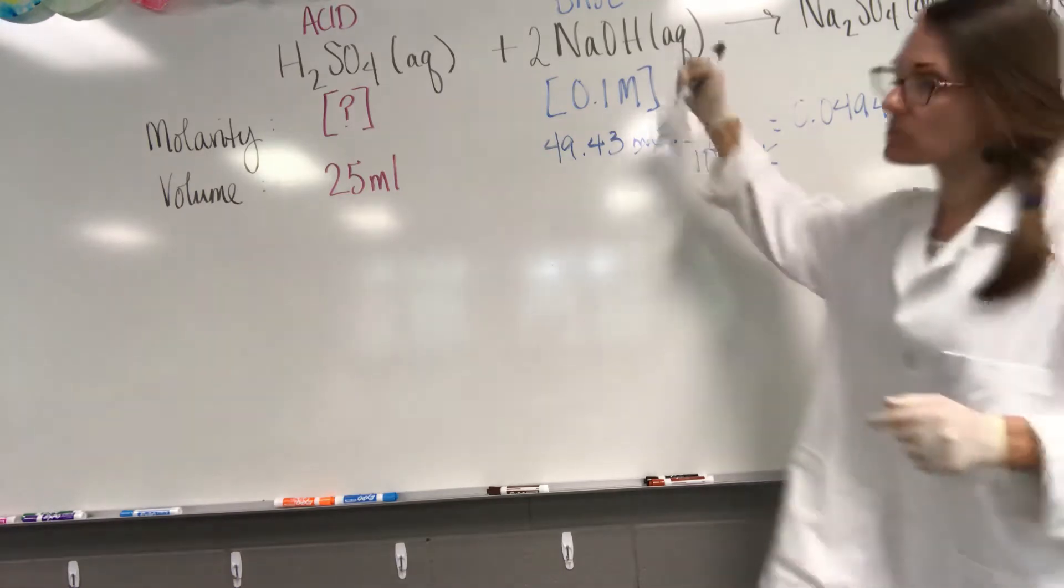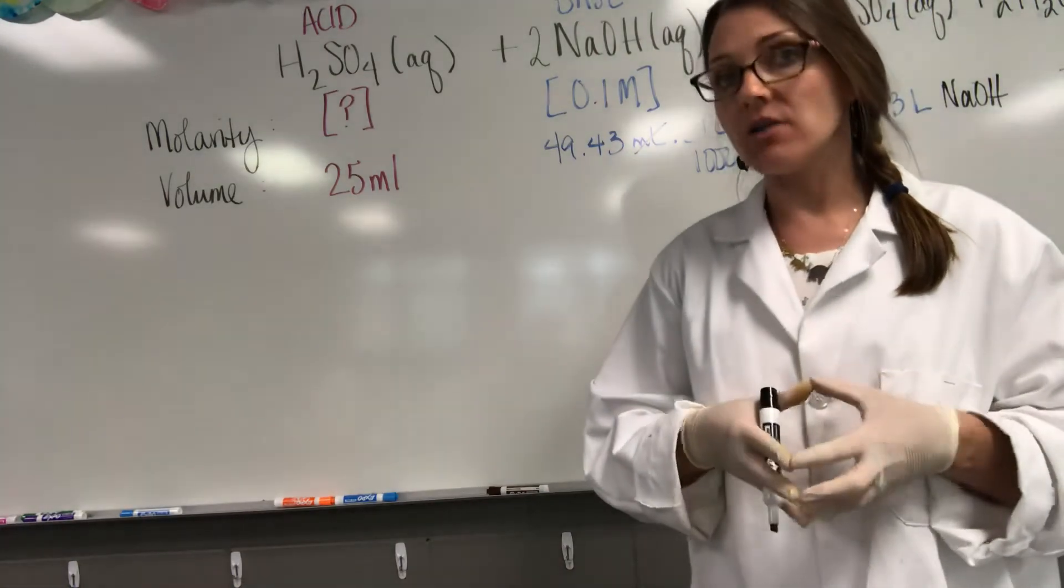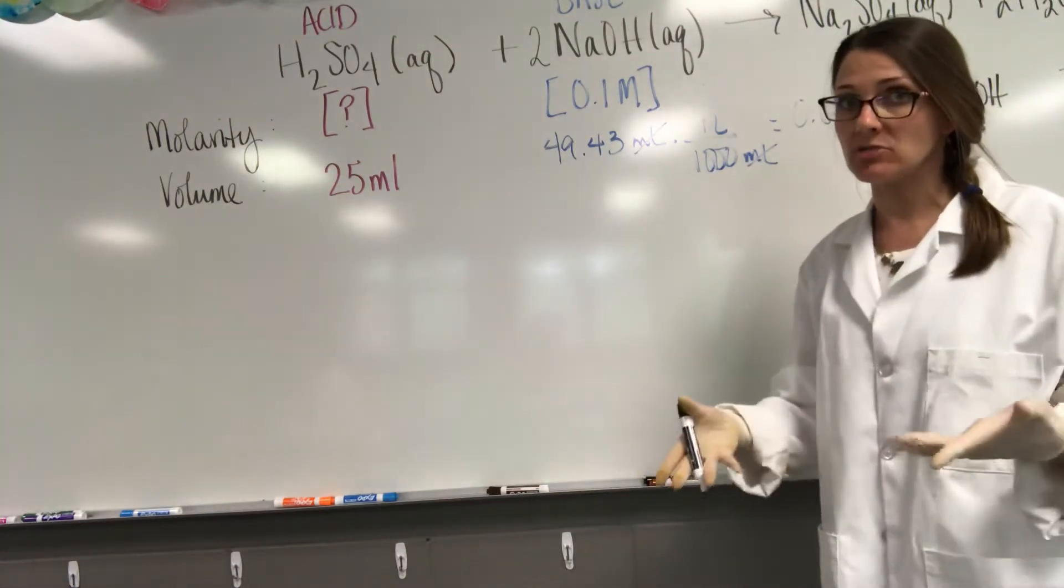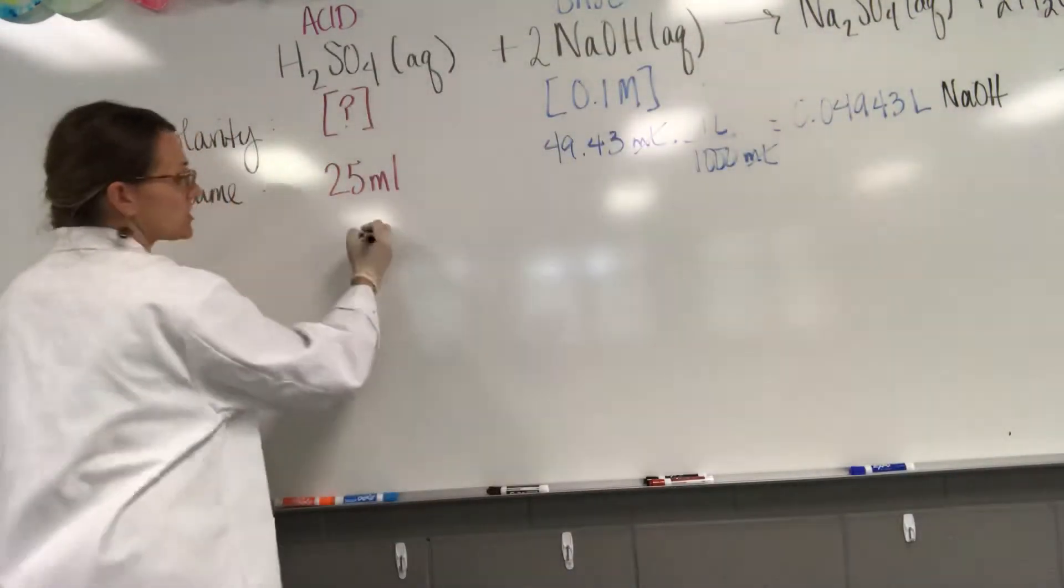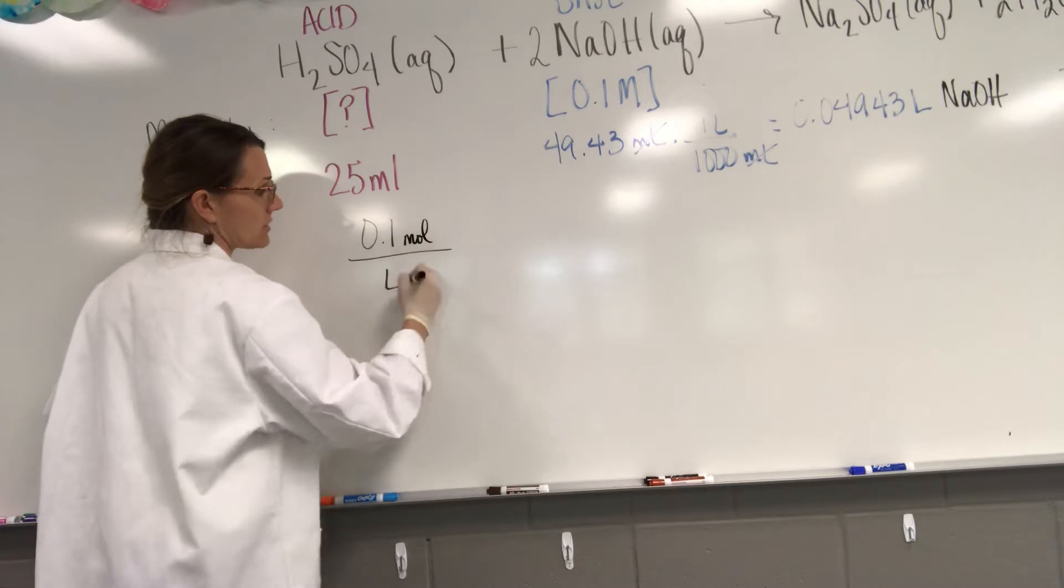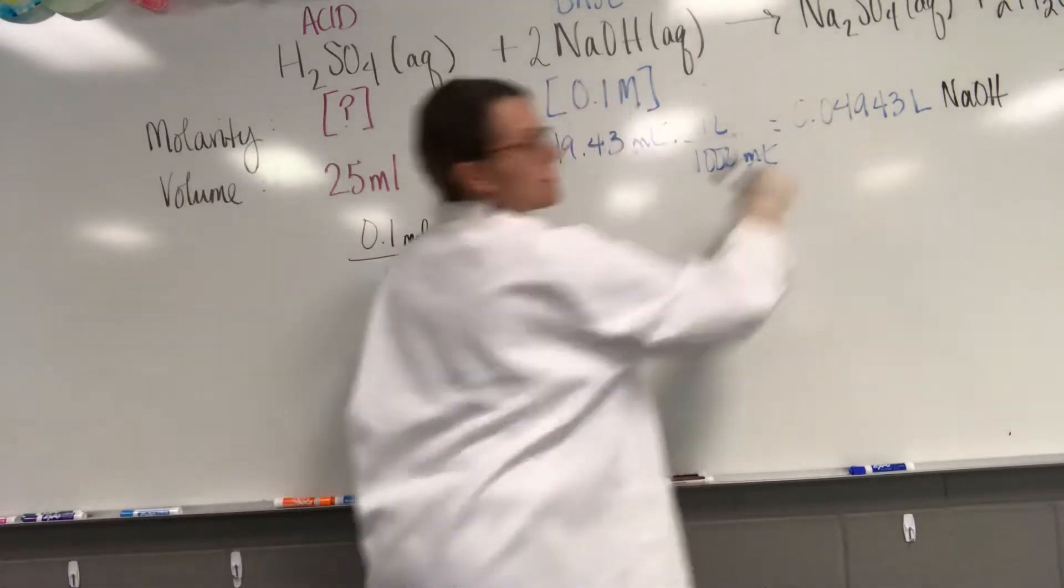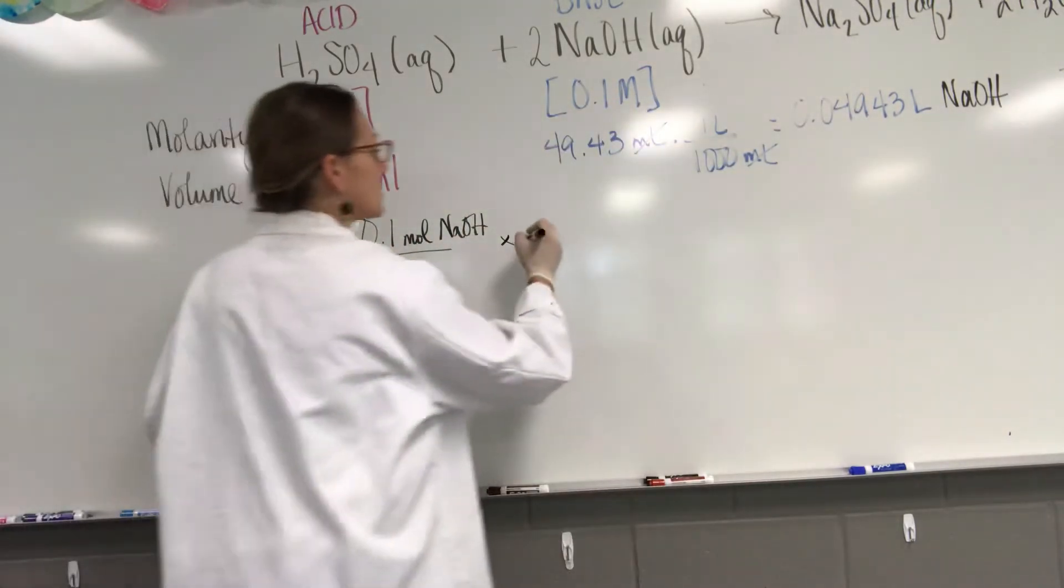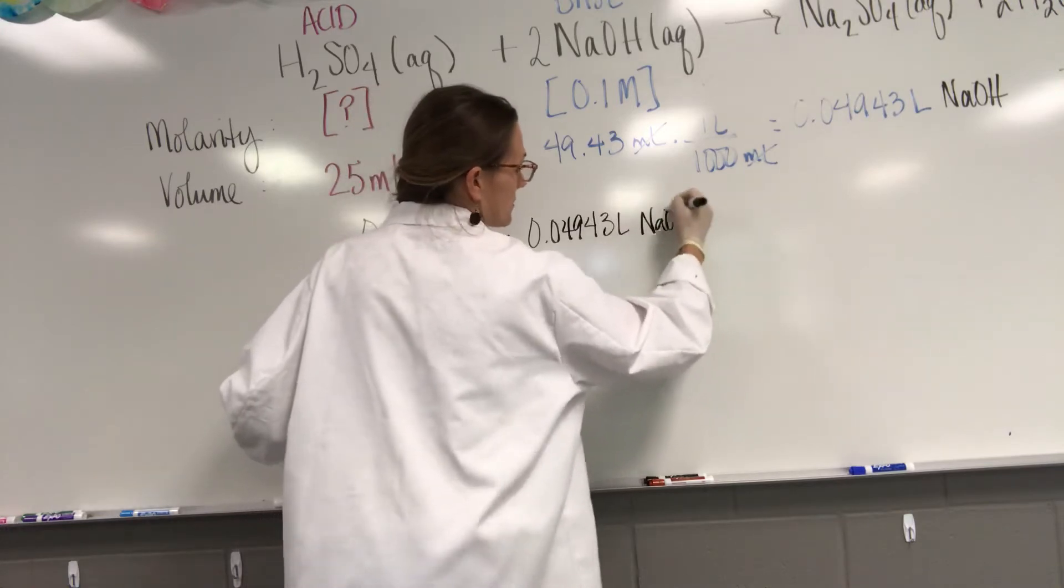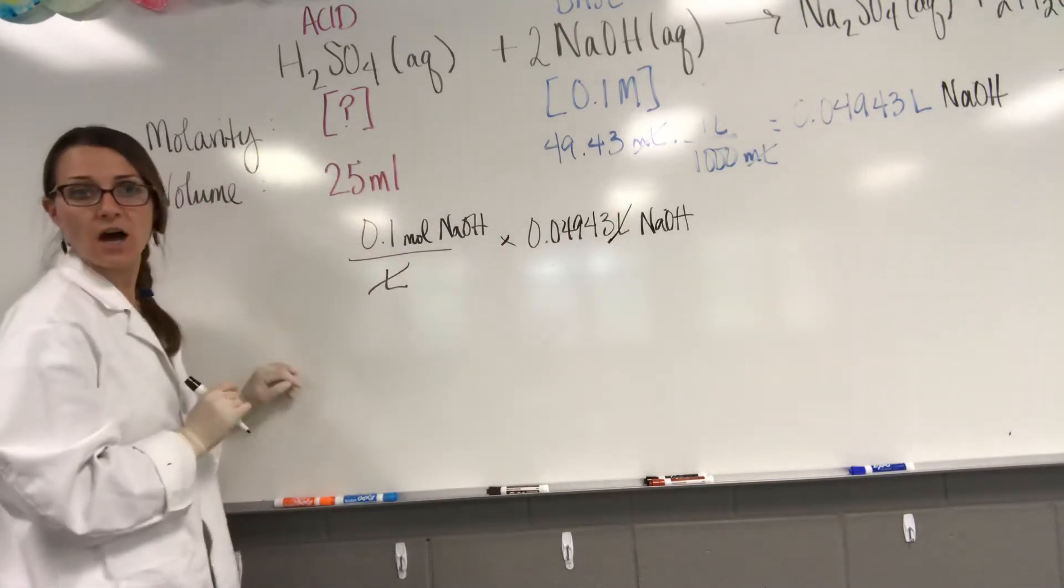And I know its molar concentration, so what I'm going to do is I'm going to determine how many moles of sodium hydroxide were in the 49.43 mils of sodium hydroxide solution. So I'm going to do that by multiplying the molarity of the NaOH. So we know that's 0.1 molar, so mole over liter, and again this is NaOH solution. We're going to multiply this by the number of liters that we had to use in the titration, so 0.04943 liters of solution. Now liters is going to cancel and I'm going to end up with the moles of sodium hydroxide.